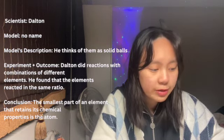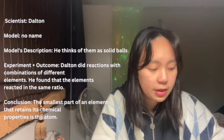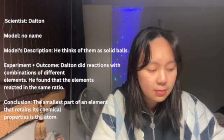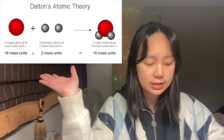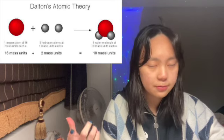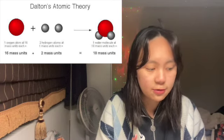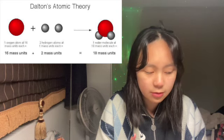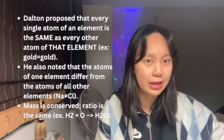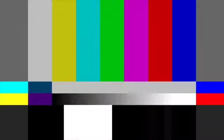Dalton did reactions combining different elements and found that elements reacted in the same ratio. He concluded that the smallest part of an element that retains its chemical property is the atom, and he thought of atoms as solid balls. For example, 16 mass units of oxygen plus 2 mass units of hydrogen gives 18 mass units of water (H₂O) — the mass is conserved and elements react in the same ratio.